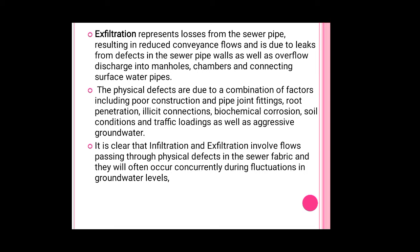The physical defects causing infiltration and exfiltration are due to combinations of factors including poor construction and pipe joint fitting, root penetrations, illicit connections, biochemical corrosion, soil conditions, traffic loading, and aggressive groundwater. It is clear that infiltration and exfiltration involve flows passing through physical defects in the sewer fabric, and they will often occur concurrently during fluctuations in groundwater levels.